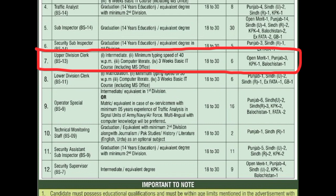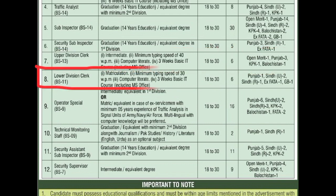Upper Division Clerk (UDC), scale 13 — intermediate required, minimum typing speed of 40 words per minute, computer literate, 3 weeks basic IT course including MS Office। Age limit: 18 to 30 years। 6 posts: open merit की 1, Punjab की 3, KPK की 1, Balochistan की 1। Lower Division Clerk (LDC), BS-11 — matriculation required, minimum typing speed of 30 words per minute, computer literate, 3 weeks basic IT course including MS Office। Age limit: 18 to 30 years। 6 vacancies: Punjab की 1, Sindh Urban की 2, Sindh Rural की 1, X-FATA की 1, GB की 1।